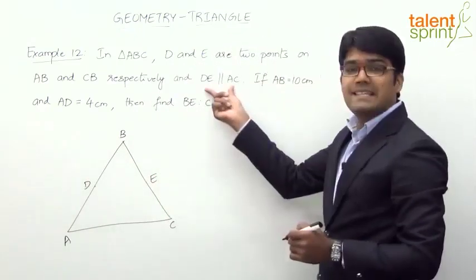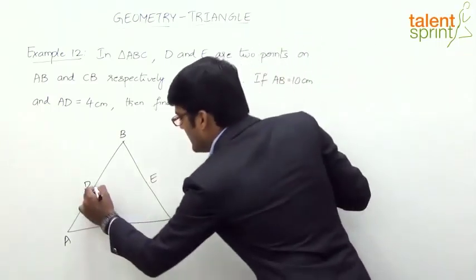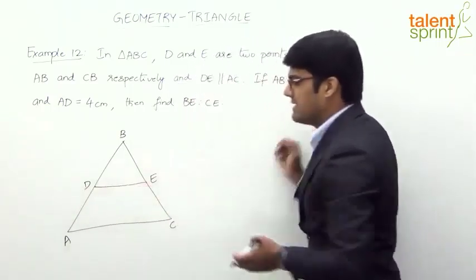E is the point on CB and DE is parallel to AC. So let us connect DE. So DE as you see is parallel to AC.